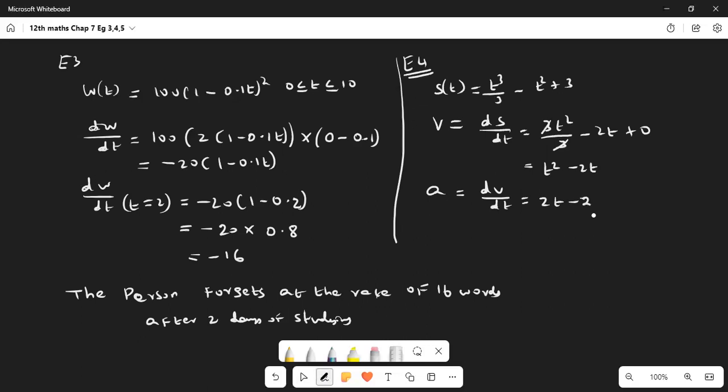At what time will velocity and acceleration be zero? Velocity = 0, so t² - 2t = 0. Taking t common: t(t - 2) = 0, so t = 0 or 2 seconds. At 0 and 2 seconds the velocity will be zero. For acceleration zero: 2t - 2 = 0, so t = 1 second.